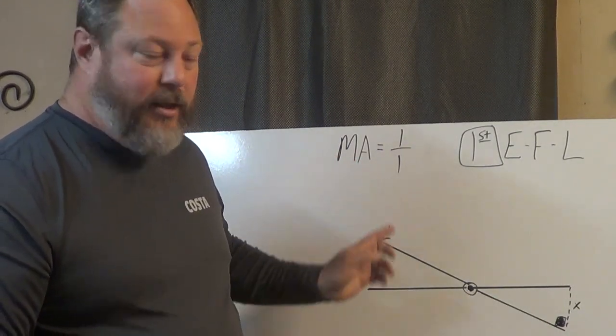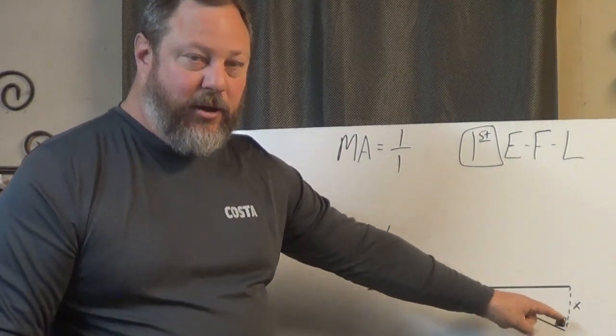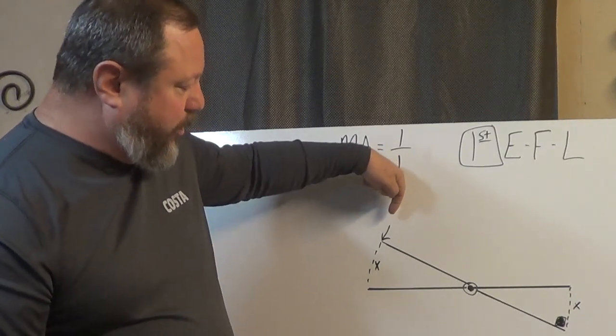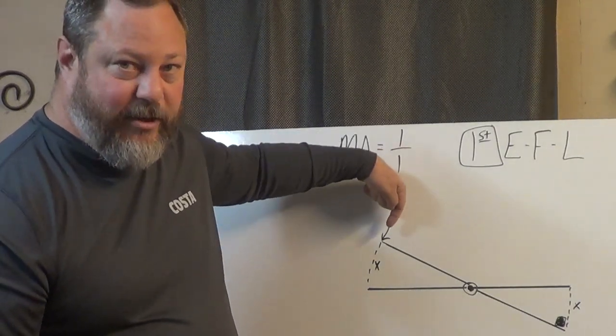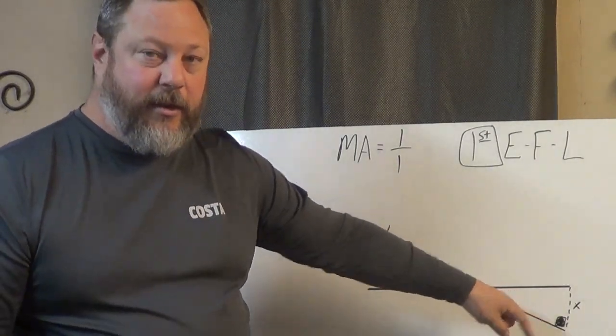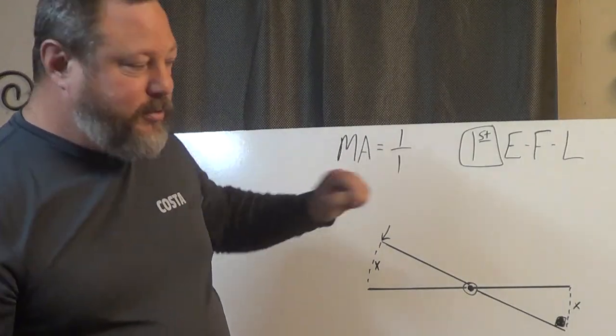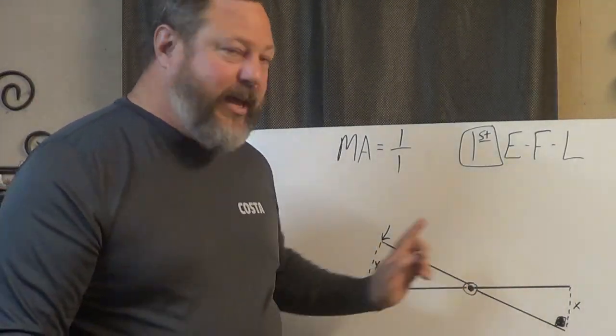So if I have a hundred pound kid on the end of the seesaw, I need another hundred pound kid or a hundred pound force pushing down on this effort arm of the seesaw in order to lift that kid, a ninety pound kid sitting right here up in the air. So there's not a mechanical advantage there really.